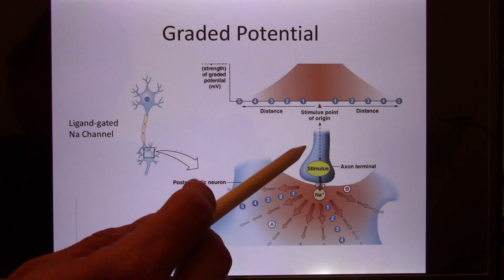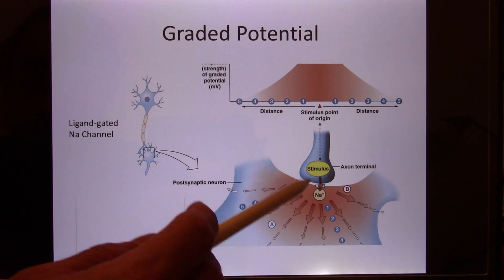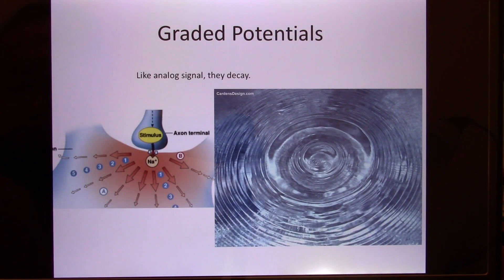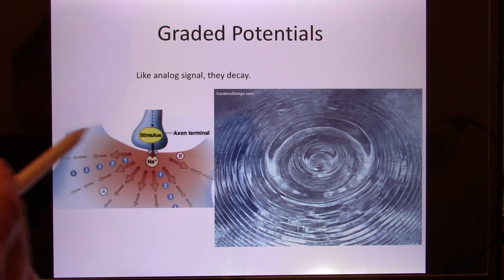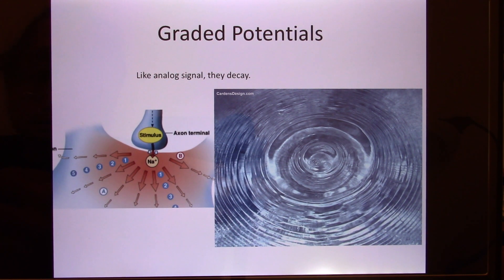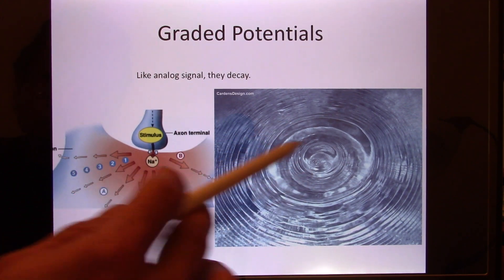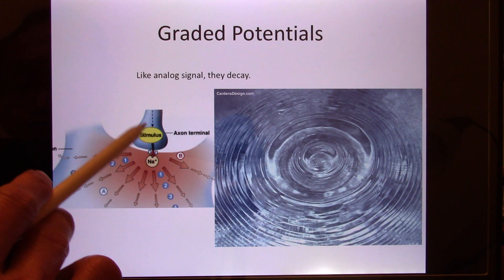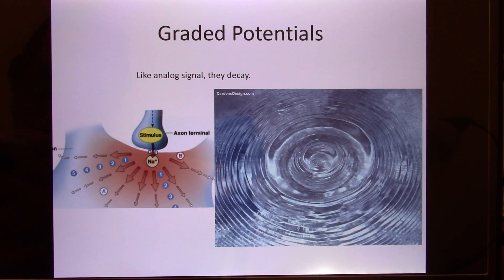We call this a graded potential. You release more neurotransmitter, more sodium channels open, and the inside becomes more positive. The graded potential occurs in the dendrite and you can control its amplitude. However, its big shortcoming is that it decays — like throwing a stone into a pond creating a wave that fades. If a signal needs to travel a long distance, such as a motor neuron axon that can be one meter long, the graded potential won't work.